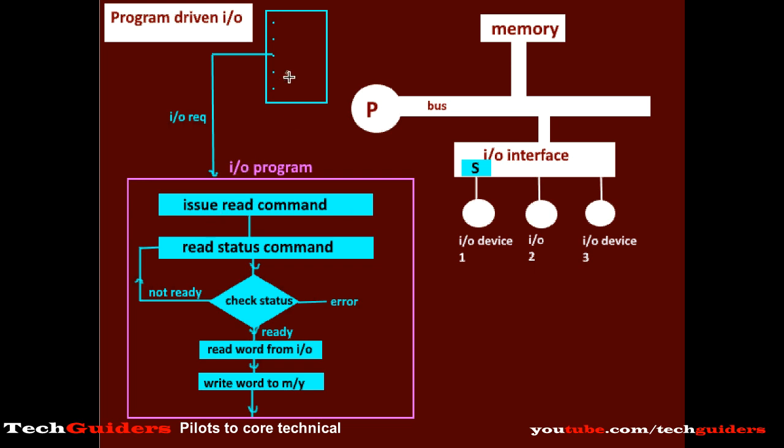So here we can see, when the processor controls the I/O operation by executing a program, it leads to the wastage of a lot of CPU cycles. See, if the device is not ready, the processor is keeping on checking the status. Hence, there is busy waiting and a total waste of processor time.